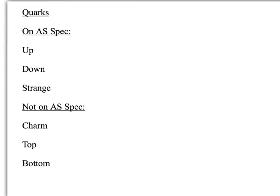Now let's talk about quarks. You only need to know about some quarks for the AS specification. The ones you need to know are your up, down, and strange quarks. The formula sheets give you all the data, but you'd need to know, for instance, that a proton is made of two ups and a down, and a neutron is made of two downs and an up. I'll look at that in more detail when I cover what's called hadrons later on.